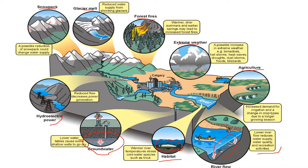Hydroelectric power: you have a dam, water runs through it, and the movement of water spins a turbine — that's how electricity is created. If the water level is reduced, there is less potential energy to convert into electricity. So there are lots and lots of problems associated with this changing climate.